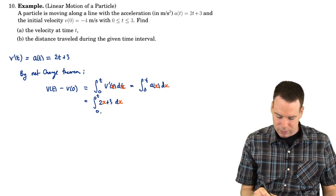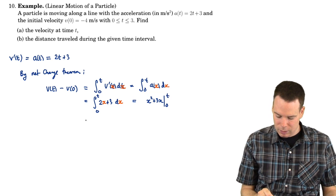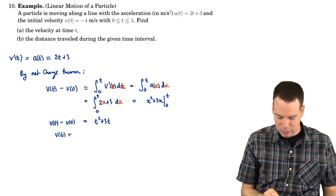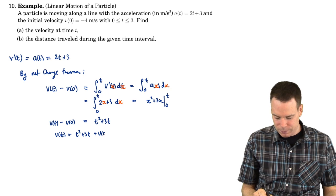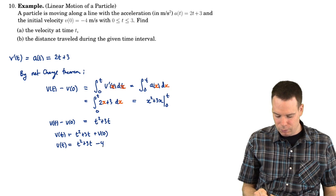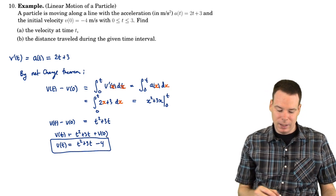Now, the anti-derivative of 2x + 3 with respect to x is x² + 3x, evaluated from 0 to t, giving t² + 3t. That equals v(t) minus v(0). So v(t) equals t² + 3t plus v(0), and since v(0) = -4, we get v(t) = t² + 3t - 4. That's the velocity at any given time — part (a) is done.